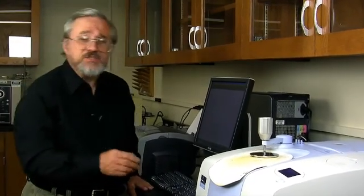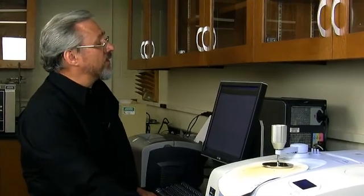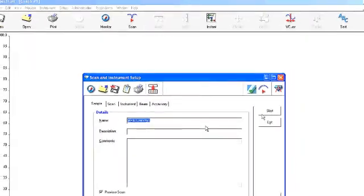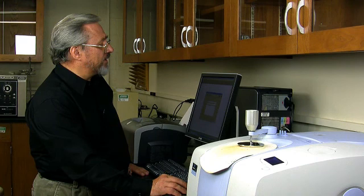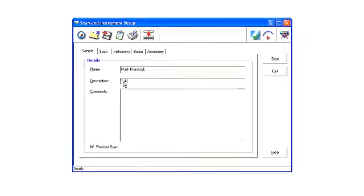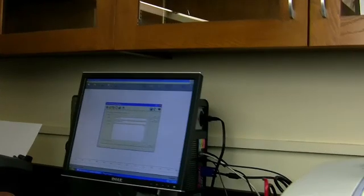The next several steps are really very easy. We're going to go back to the icon that we call Scan. Click on that. I've already entered my name in here, and I'm going to type in a description of the sample. In this case, it's 1,4-dit-butylbenzene.